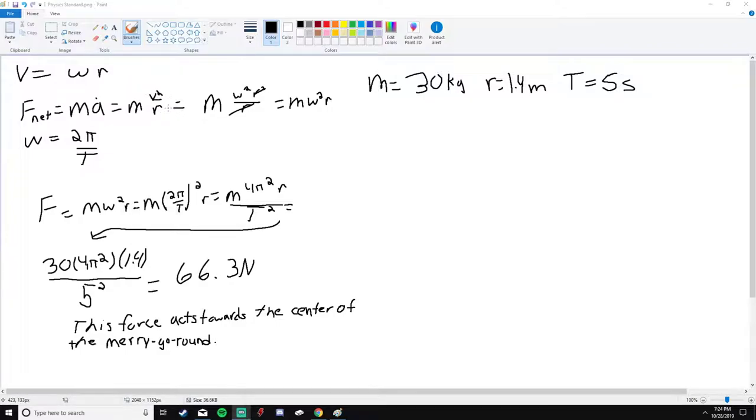However, we aren't given a velocity, so instead we have this formula: velocity equals angular speed times radius.